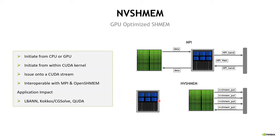NVSHMEM is a technology we support for partitioned global address space messaging using the CPU or the GPU. In typical MPI, you'd issue a send and wait for the results to complete, and the data has to move through the CPU out to the network and back to the GPU. With NVSHMEM, the GPU can actually initialize all of this — you can put messages through the network onto other GPUs or get data off of other GPUs. It also interoperates well with CUDA streams. This is a programming model I encourage you to take a look at, and there are a variety of trainings available online for it.